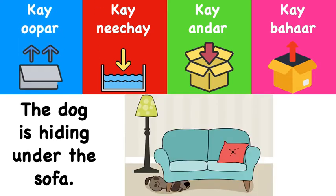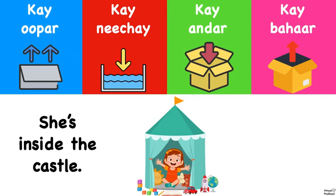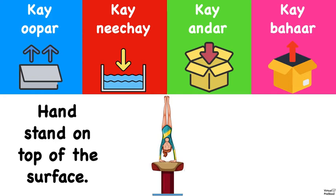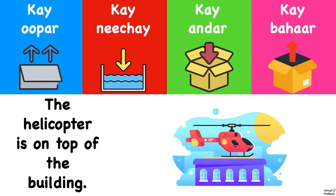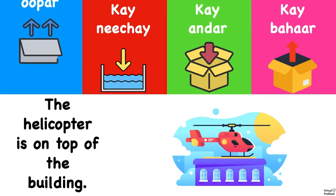The dog is hiding under the sofa. Ke upar, ke neiche, ke under, or ke bahar? Ke neiche. She's inside the castle. Ke upar, ke neiche, ke under, or ke bahar? Ke under. She's doing a handstand on top of the surface. Would that be ke upar, ke neiche, ke under, or ke bahar? Ke upar. They're hiding under the blanket. Would that be ke upar, ke neiche, ke under, or ke bahar? Ke neiche. The helicopter is on top of the building. Ke upar, ke neiche, ke under, or ke bahar? Ke upar.